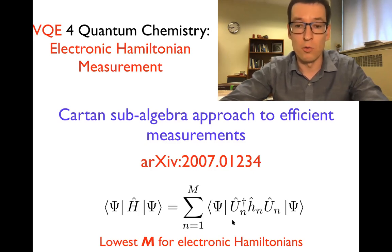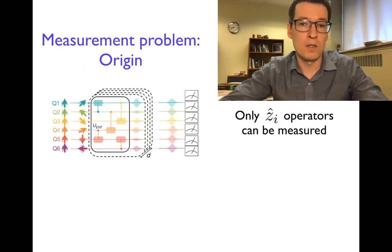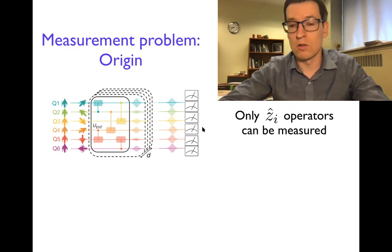Now, before I tell you how we did this, let me first introduce what the measurement problem origin is. And when it comes to variational quantum eigensolver, we create the wave function that is created by circuit. And when we want to obtain the expectation value of the Hamiltonian, we measure the prepared wave function. And it turns out that on the quantum computers that we have now, the only operator that we can measure is a z operator for each qubit, so essentially polarization along the z-axis.